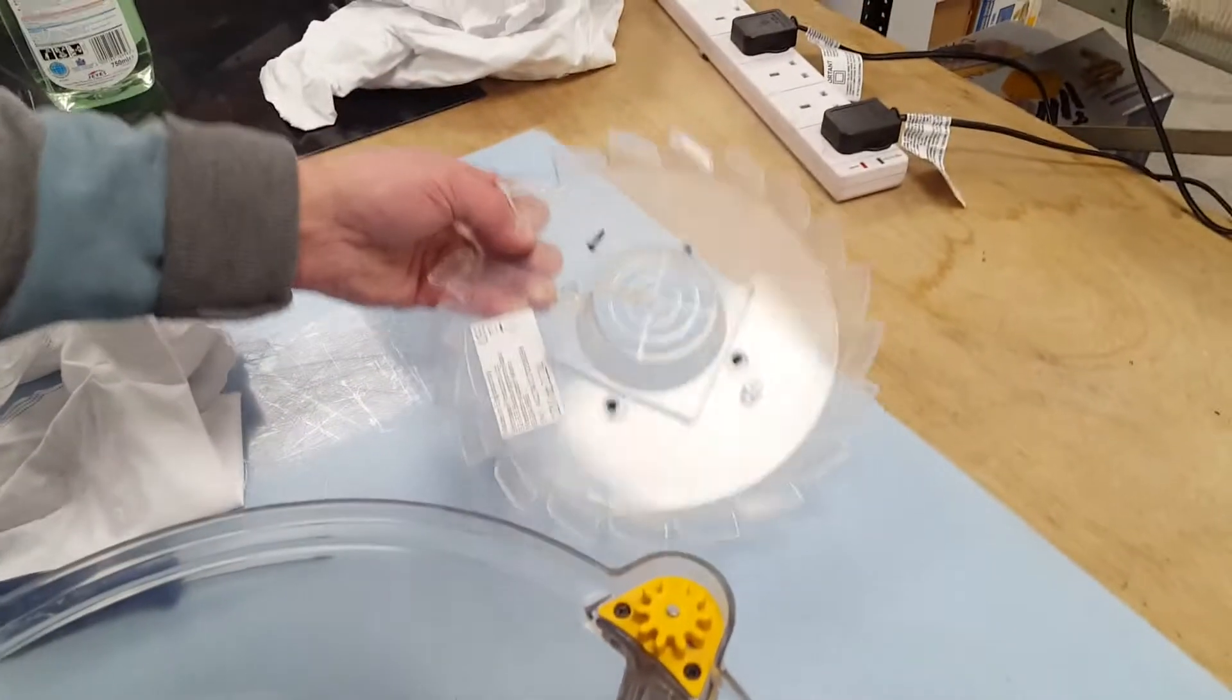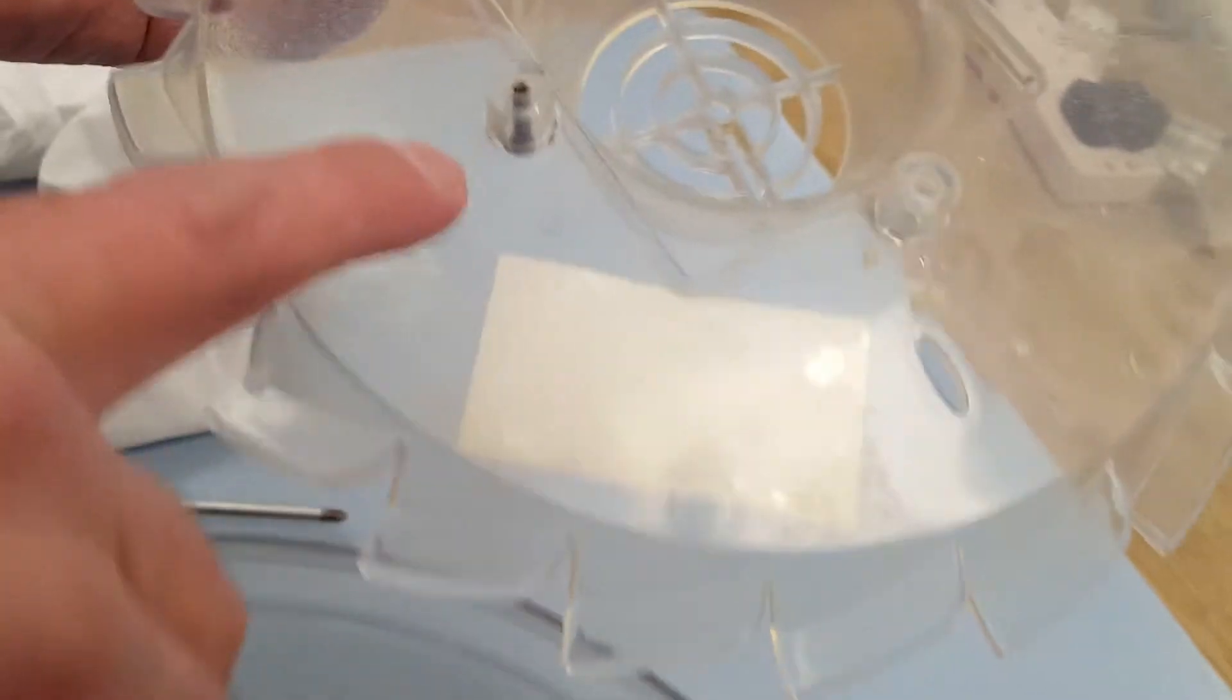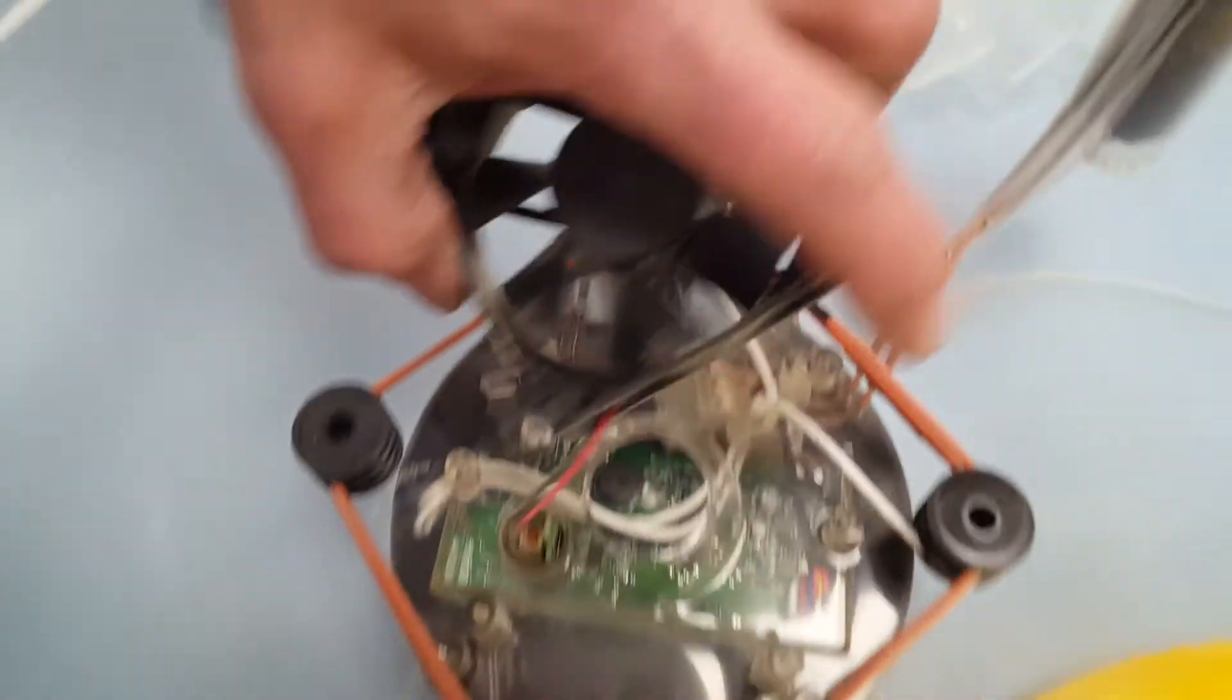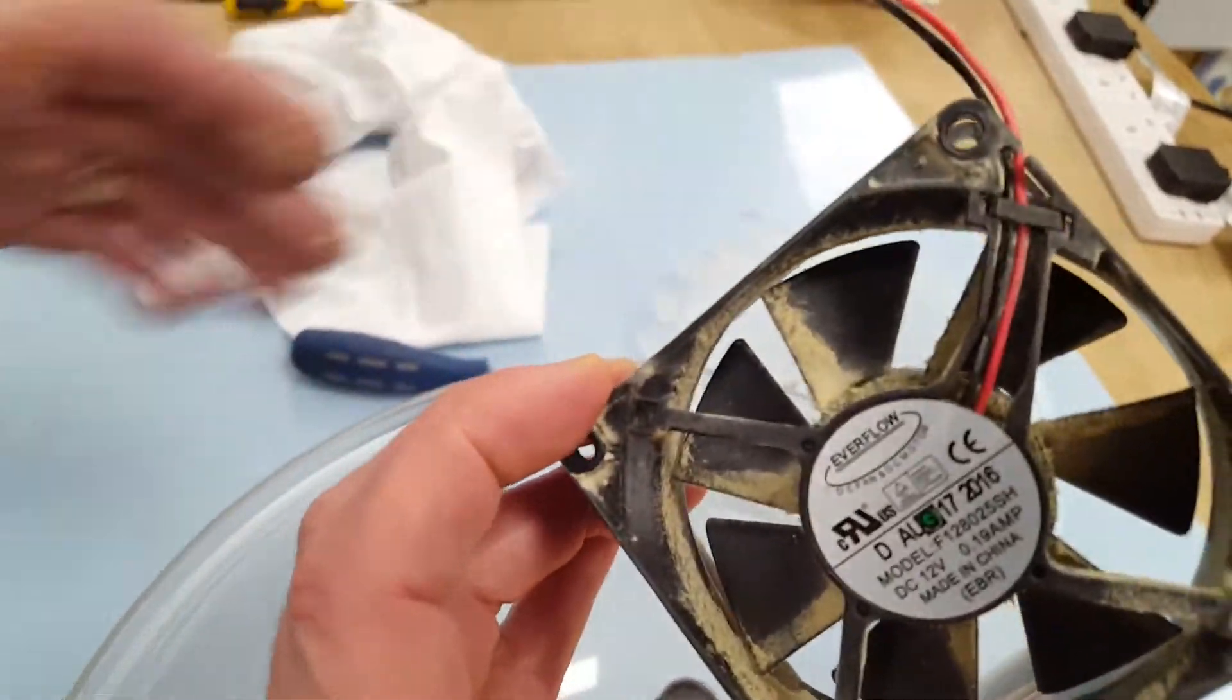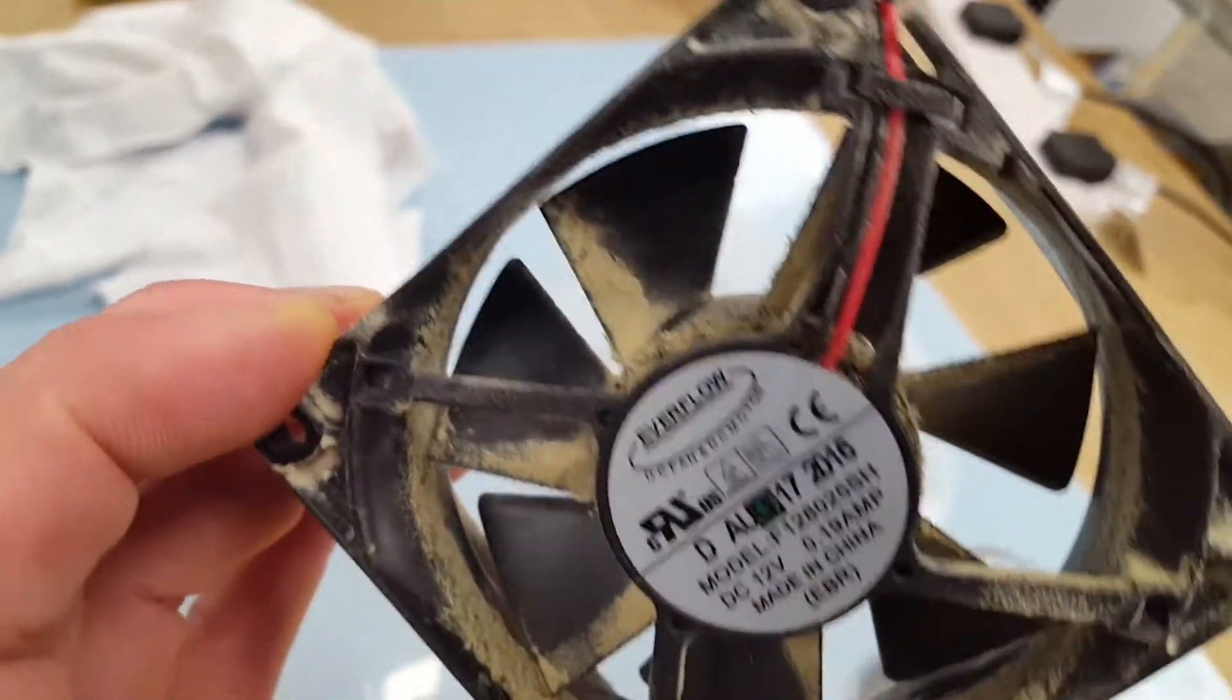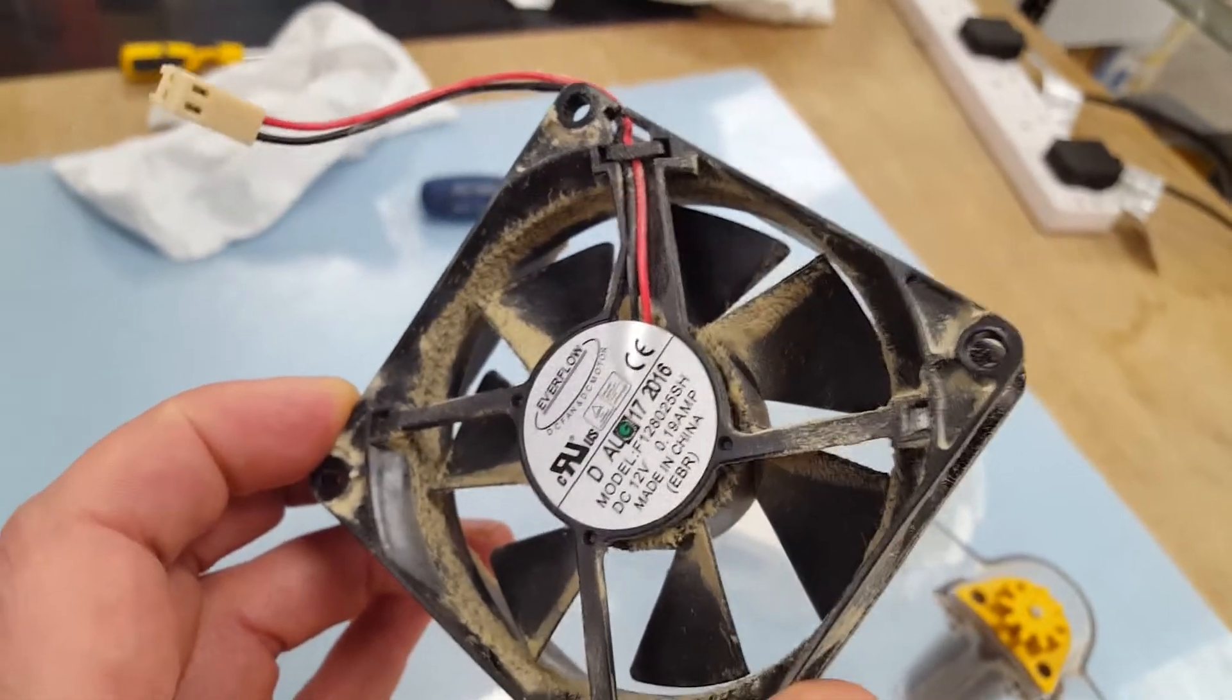So that comes out, four screws. You can see build up of dust there. Yeah, around the fan. The fan just literally lifts up and unplugs from there. And that's the fan out. Let's have a quick look at that. So that's really pretty dirty in there.